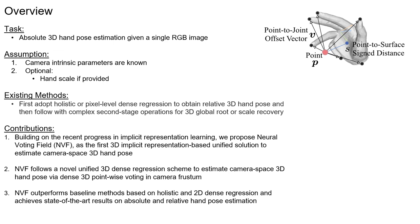We present a unified framework for camera space 3D hand pose estimation from a single RGB image, based on 3D implicit representation. As opposed to recent works, most of which first adopt holistic or pixel-level dense regression to obtain relative 3D hand pose and then follow with complex second-stage operations for 3D global root or scale recovery, we propose a novel unified 3D dense regression scheme to estimate camera space 3D hand pose via dense 3D pointwise voting and camera frustum.